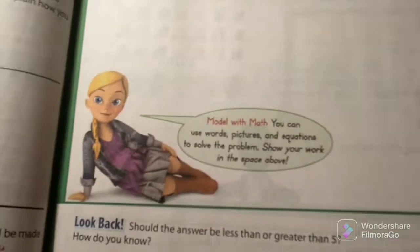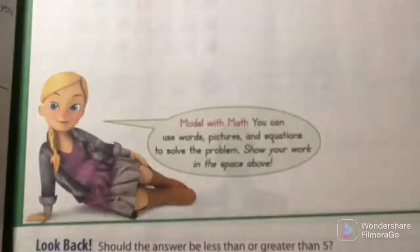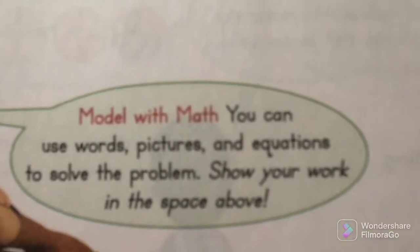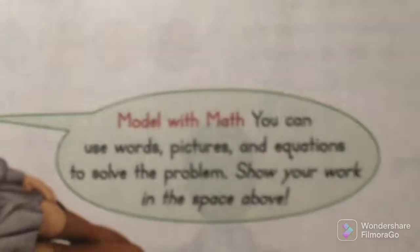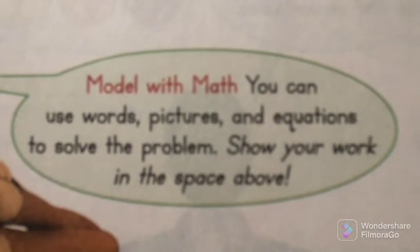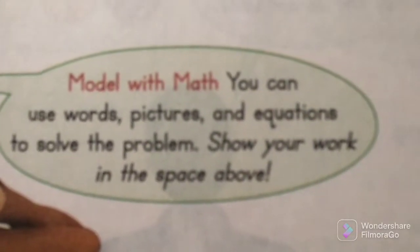Boring, boring, boring, boring. Boring. 52 weeks in a year and there are 52 cells in your brain. Why you got her doing that pose? Let's just say model with math. You can use words, pictures, and equations to solve the problem. Show your work in the space above.